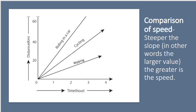Now let us compare speeds for different activities. The steeper the slope, the greater the speed. If you look at the distance-time graph, the slope for cycling is steeper than for walking, and the slope for riding in a car is steeper still. So a steeper graph line indicates greater speed.